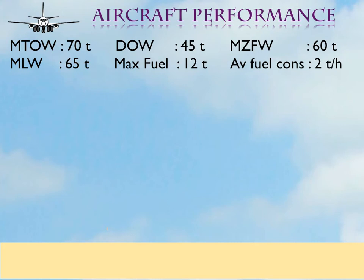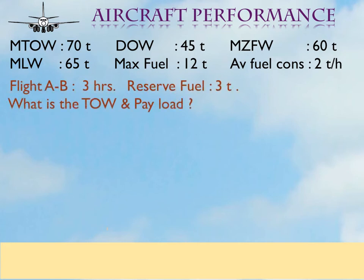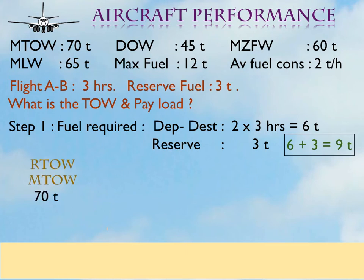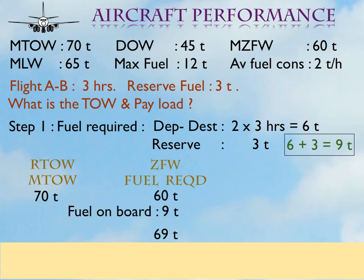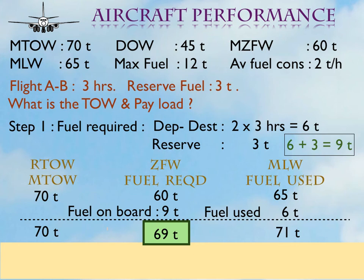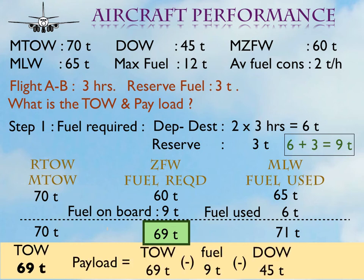Let us work out an example. For the aircraft previously quoted, if the flight time is three hours and the reserve fuel required is three tons, what is the takeoff weight and the payload? Fuel required for the flight is nine tons — that is, flight fuel of six tons plus reserve fuel of three tons. The max takeoff weight is 70 tons. The zero fuel weight is 60 tons and fuel on board is nine tons, therefore the MZFW-restricted takeoff weight is 69 tons. Next, max landing weight is 65 tons plus fuel used of six tons, giving a takeoff weight of 71 tons. The least is restricted by the zero fuel weight, so the max takeoff weight possible is 69 tons. Therefore, the payload is 69 tons minus fuel on board minus the dry operating weight, which equals 15 tons.